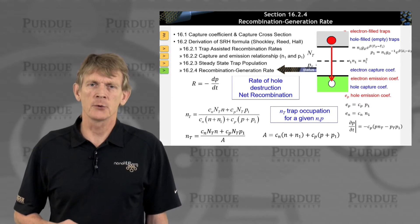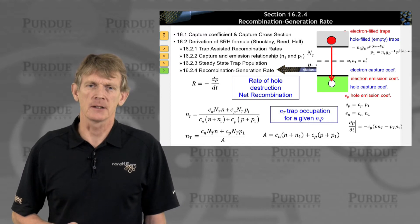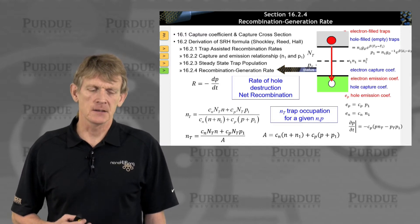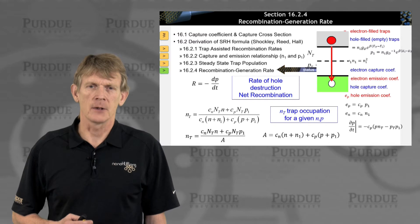And we computed a steady-state trap population. That resulted in this pretty long gnarly expression on the bottom left here for little n capital T.